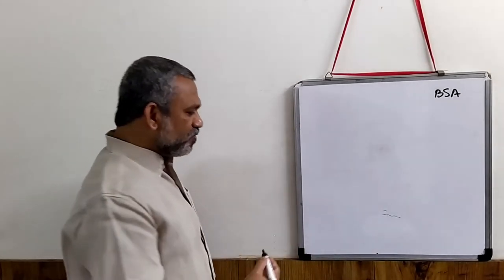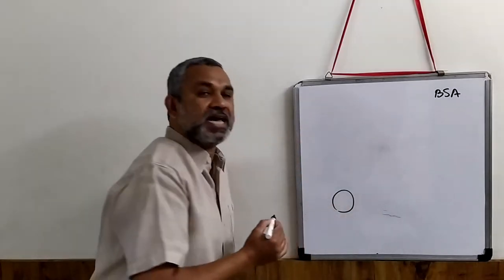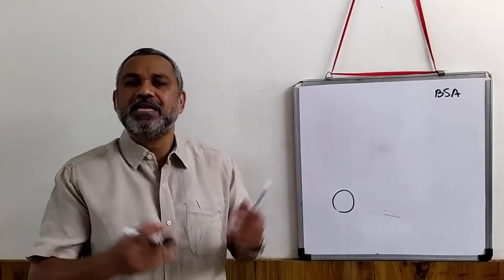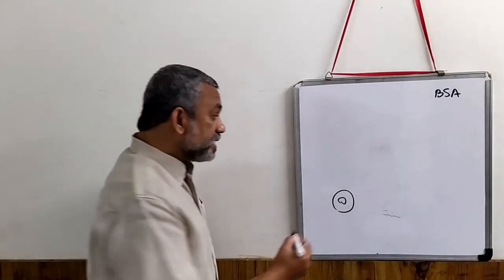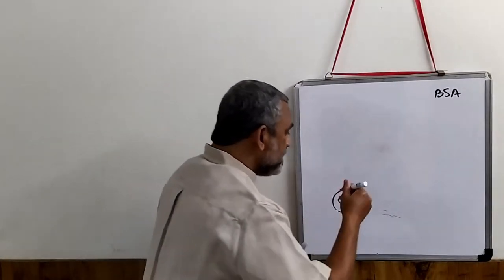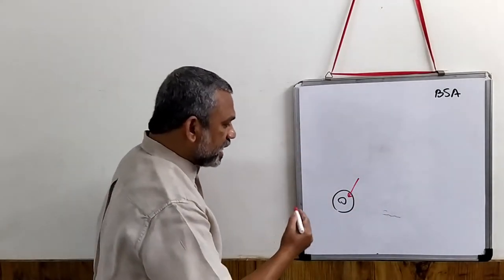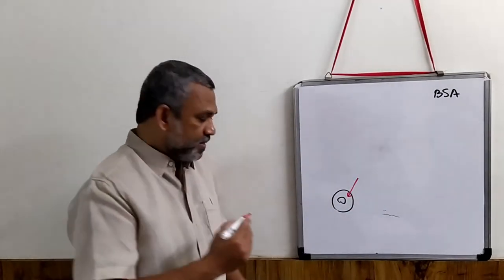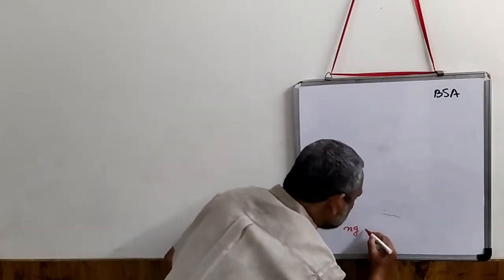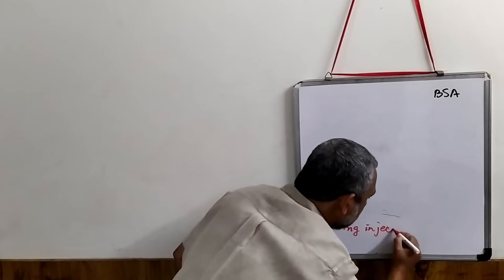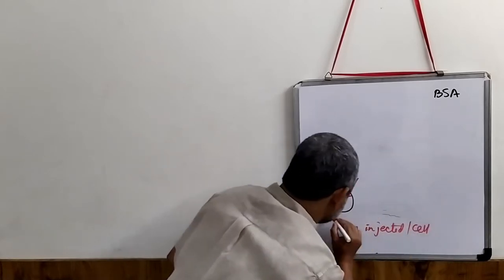In an oocyte — it is a large egg — which has a nucleus, this BSA was injected. So BSA is injected. As the amount increases, let us assume the x-axis represents nanograms injected per cell.